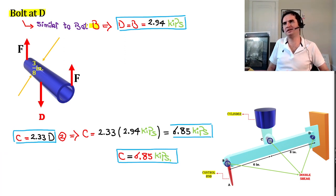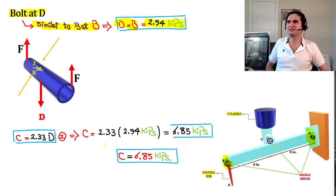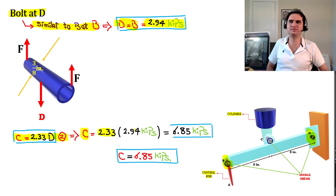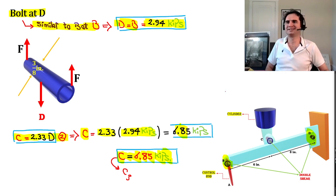The bolt at D is identical to the bolt at B, so F_D = 2.94 kips as well. Using Equation 2, F_C = 2.33 × F_D = 2.33 × 2.94 = 6.85 kips. We call this C3.